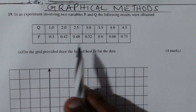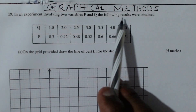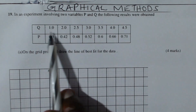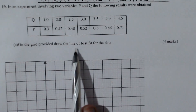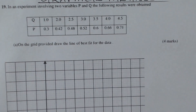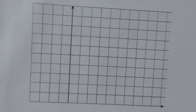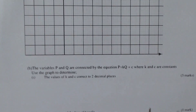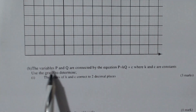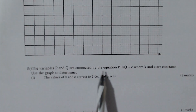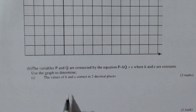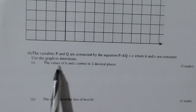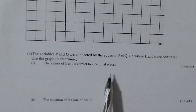In an experiment involving two variables p and q, the following results are obtained in the table. On the grid provided, draw the line of best fit for the data. The variables p and q are connected by the equation p equals kq plus c, where k and c are constants. Use the graph to determine the values of k and c correct to two decimal places.